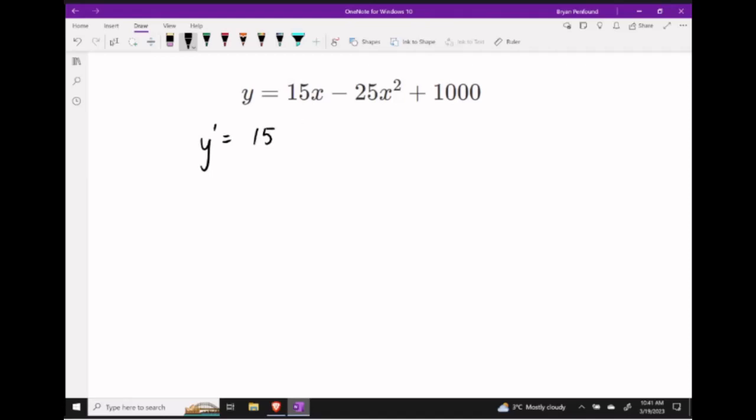Next we have negative 25x squared, so we're going to keep our coefficient of 25 and then apply the power rule to x squared. And finally our plus 1000 will turn into 0 when we apply the derivative operation to it.